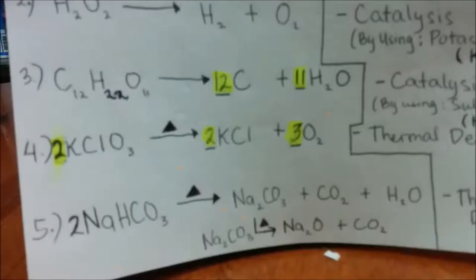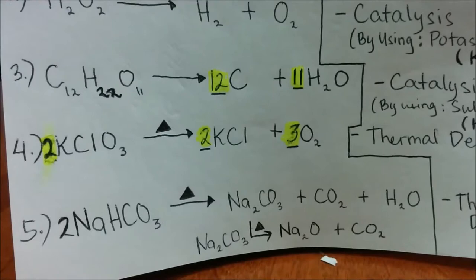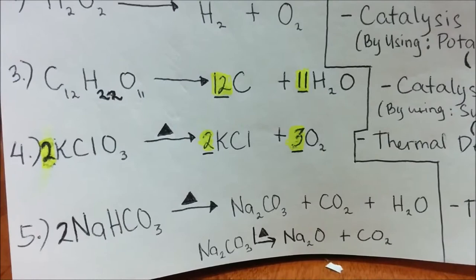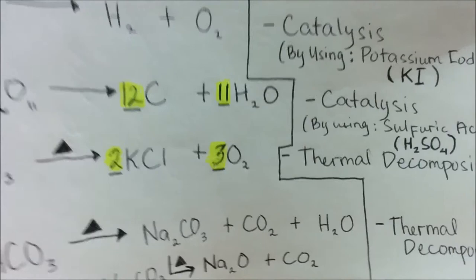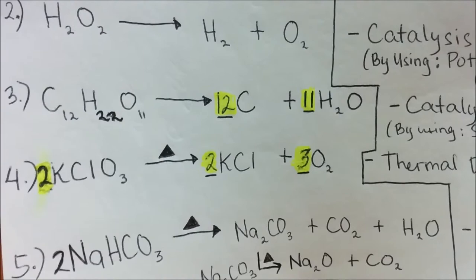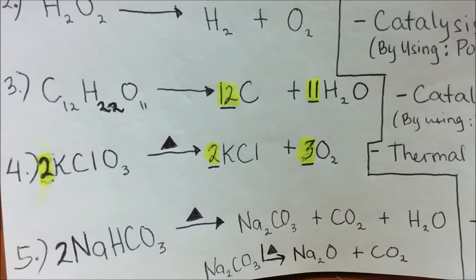And that's the decomposition of hydrogen peroxide. My third example is sucrose, also known as table sugar. Sucrose is composed of 12 carbon, 22 hydrogen, and 11 oxygen. I'll be using sulfuric acid as a catalyst in order to accelerate the decomposition reaction of sugar. Sugar is broken down into 12 parts of carbon and 11 parts of dihydrogen oxide. I'll be showing a video of this decomposition reaction.